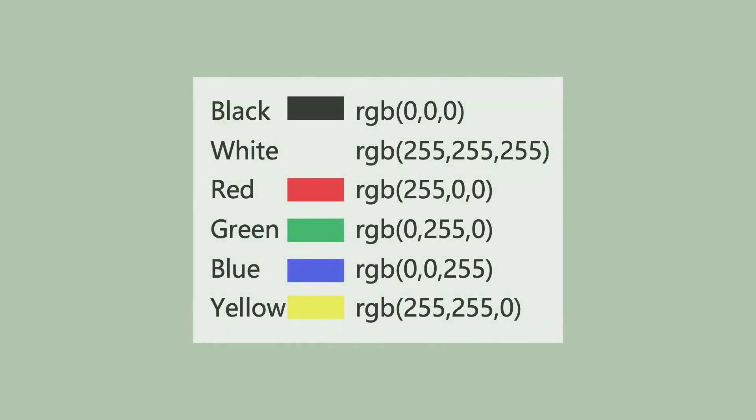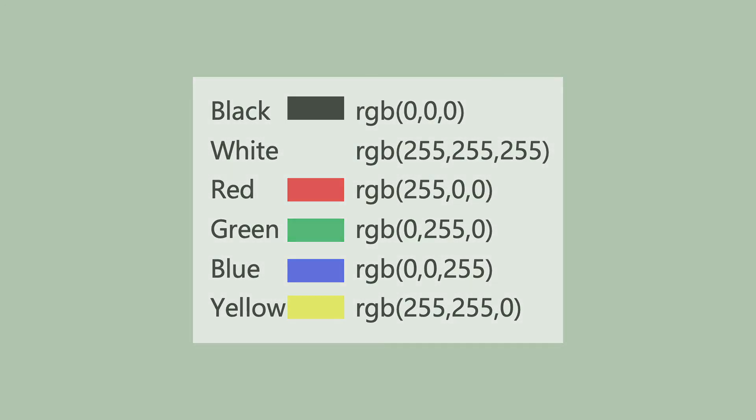Another way you might see color represented is with RGB values. With RGB, the red, green, and blue amounts in the color are represented. Each color has a range of 0 to 255.